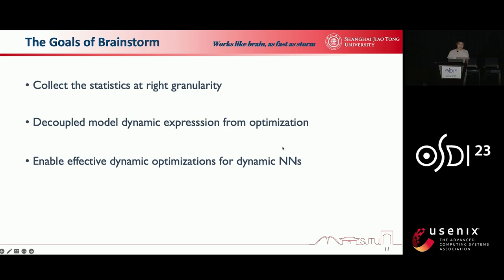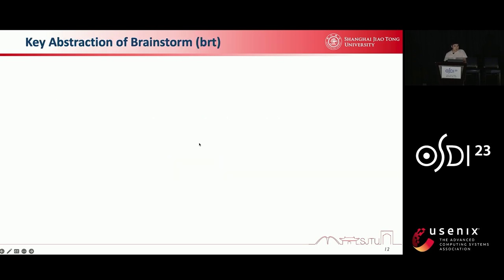The goals of Brainstorm are as follows. First, we need to collect the statistics of dynamism at the right level. Second, we need to decouple the model dynamic expression from optimization. Finally, we need to enable dynamic optimizations for dynamic models. In order to achieve these goals, Brainstorm first proposes several key abstractions to enable dynamic optimizations.